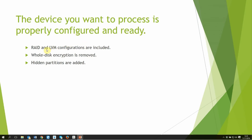Before you start the process you should check whether there is any RAID or LVM. If so, you should configure it properly before you run the NCASE evidence processor. If there is any disk encryption, sort that out before running the evidence processor, otherwise it will be completely useless and won't give you any result. So these are at least three things you should consider before running the NCASE evidence processor.